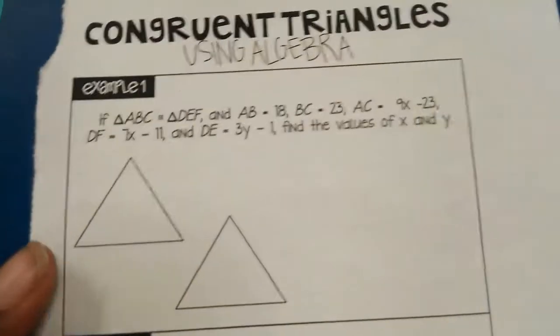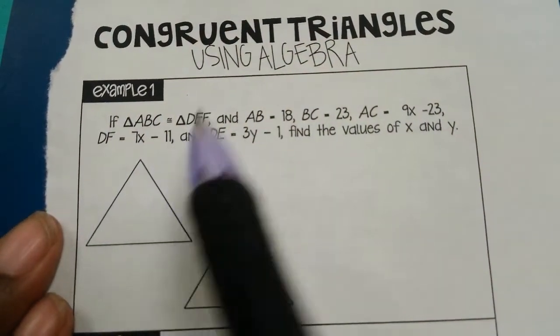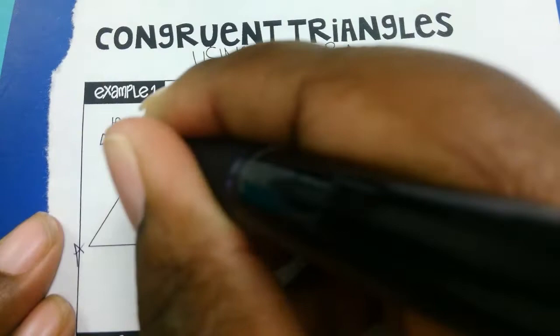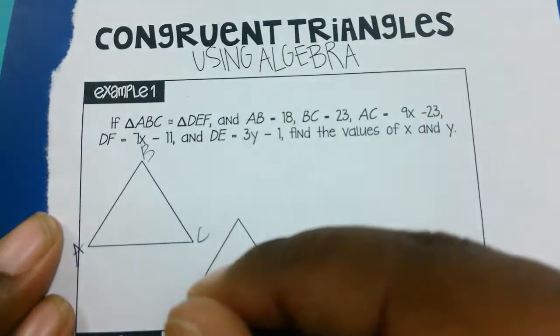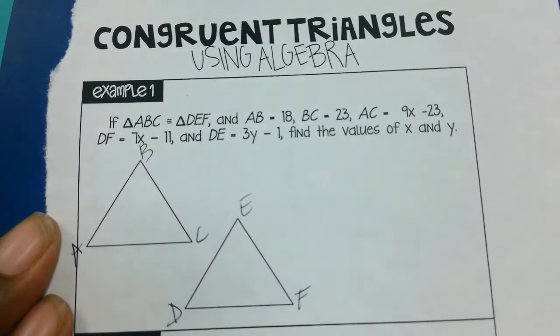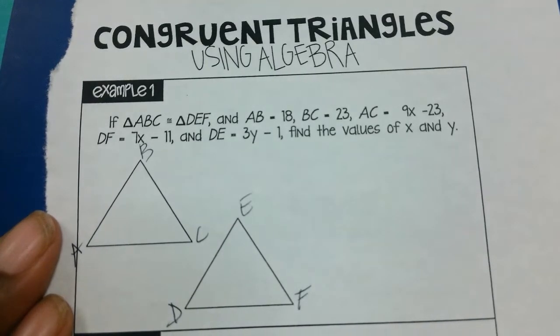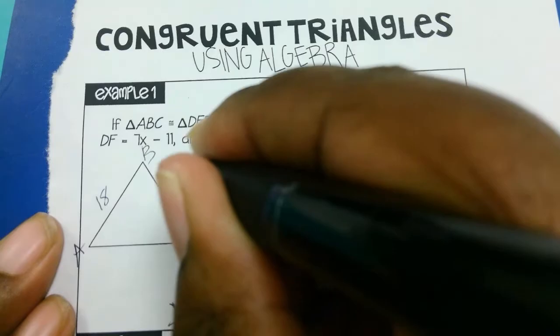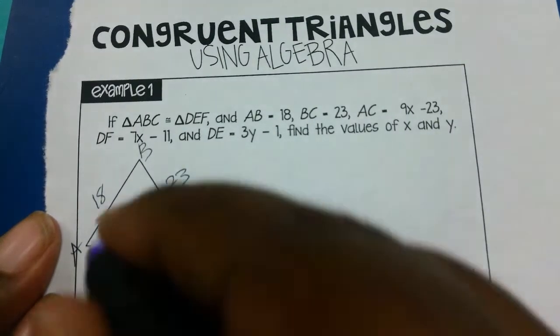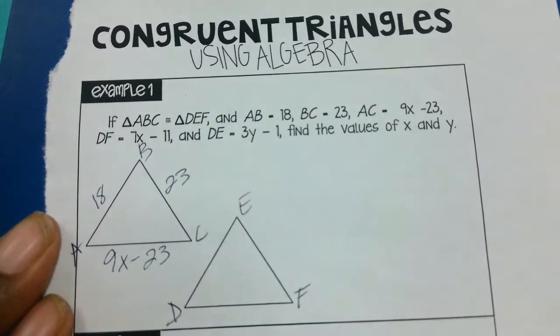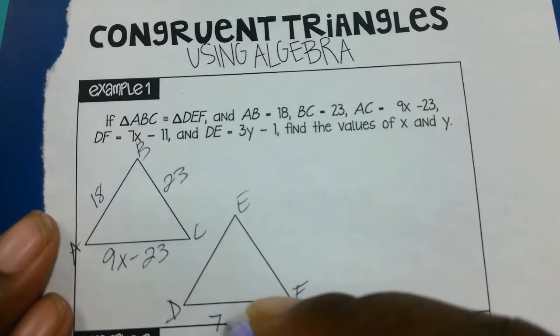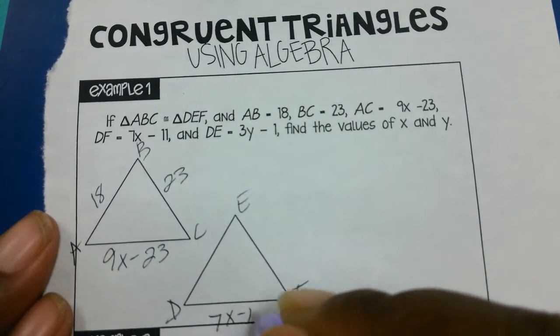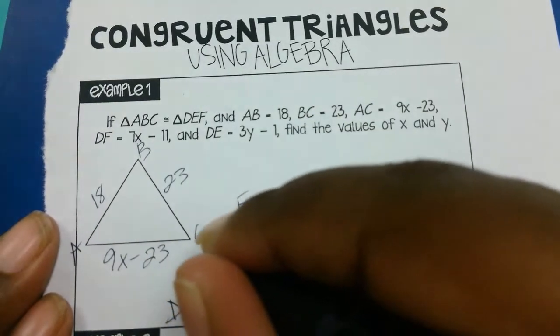Now when we go to the back side, they wrote a triangle congruence statement, so I would label mine ABC and triangle DEF. They want us to solve for x and y. Well, they told us that AB is 18, so I'm labeling the parts on my triangle. BC is 23, AC is 9x minus 23, DF they said is 7x minus 11, and DE is 3y minus 1.